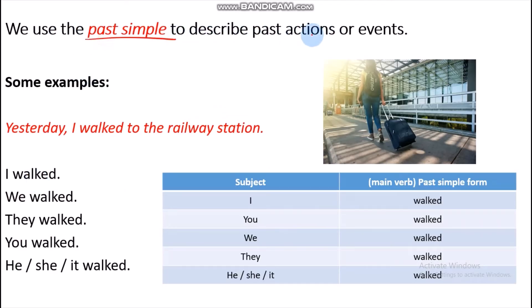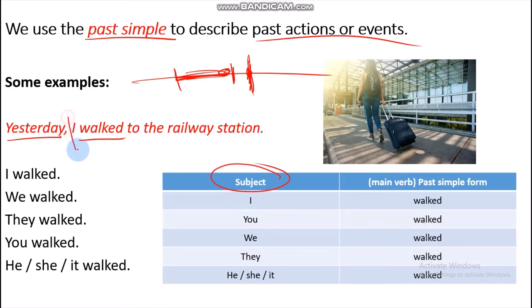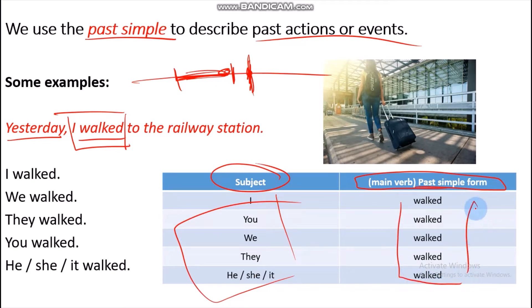We use past simple to describe past actions — جو کہ میں نے already discuss کیا ہے۔ For example: yesterday I walked to the railway station — ایک شخص جو railway station کی طرف جا رہا تھا، وہ yesterday کے portion میں گیا ہے۔ آج وہ کچھ اور کر رہا ہے — کل کا بیتا پل جو ہوتا ہے اس کو past میں represent کرنا ہے۔ Structure: subject + simple past form (second form of verb) — I, we, you, they, he, she, it + second form of verb — walk → walked (adding -ed).